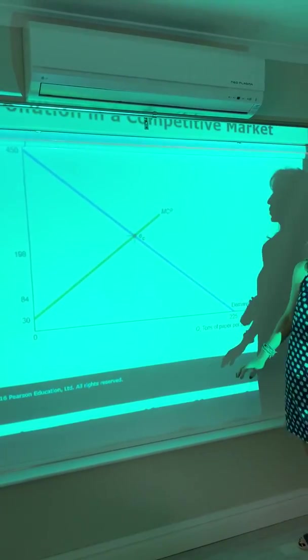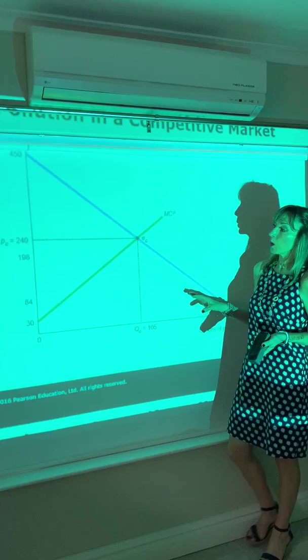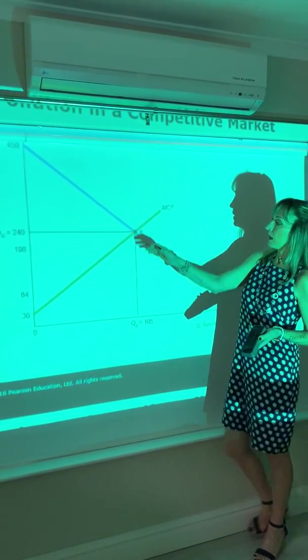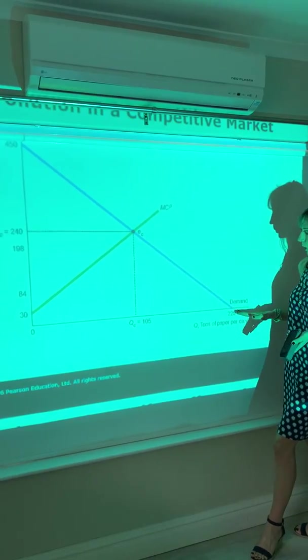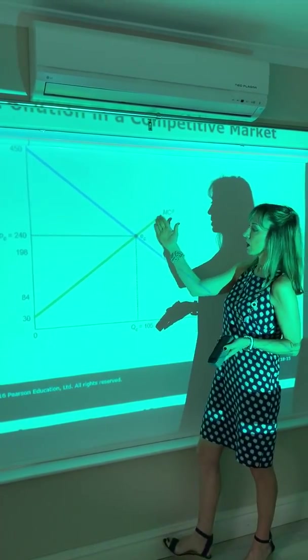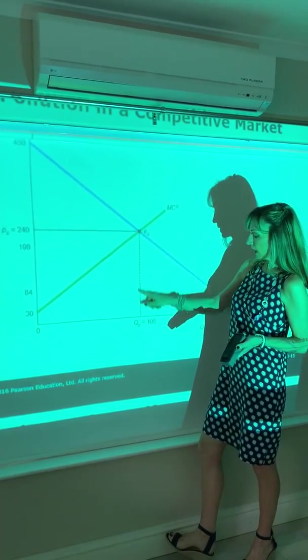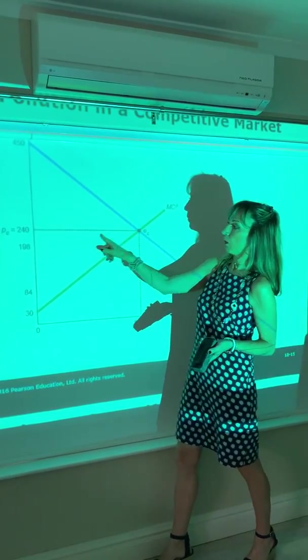To see this, we take a diagram from the textbook by Perloff, published by Pearson. We see that a perfectly competitive market will operate where demand, market demand, equals marginal private cost or supply at this equilibrium of 105 and a price of 240.